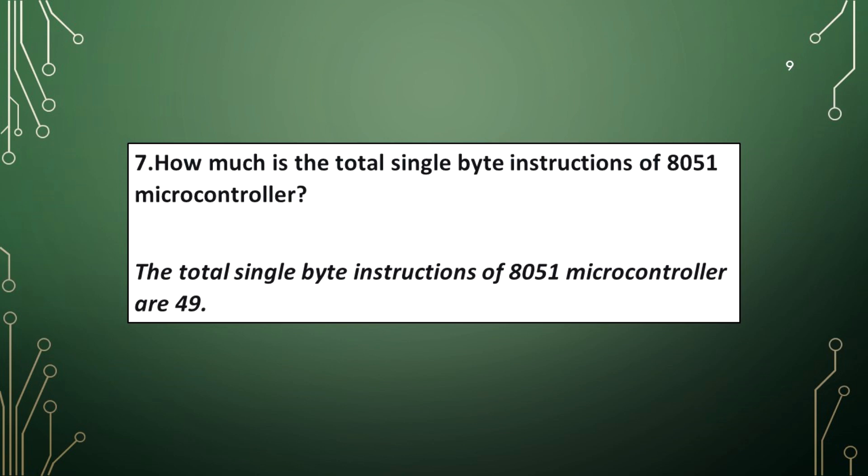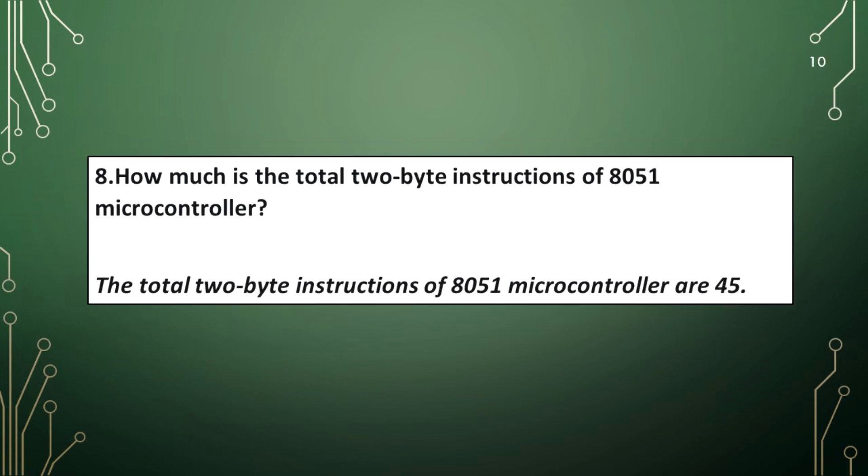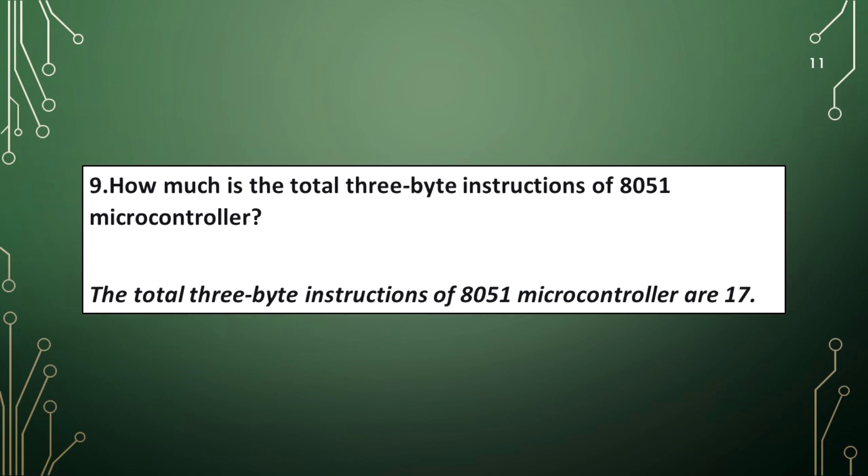How many single byte instructions does the AT51 microcontroller have? The total single byte instructions are 49. How many 2-byte instructions? The total 2-byte instructions are 45. How many 3-byte instructions? The total 3-byte instructions are 17.